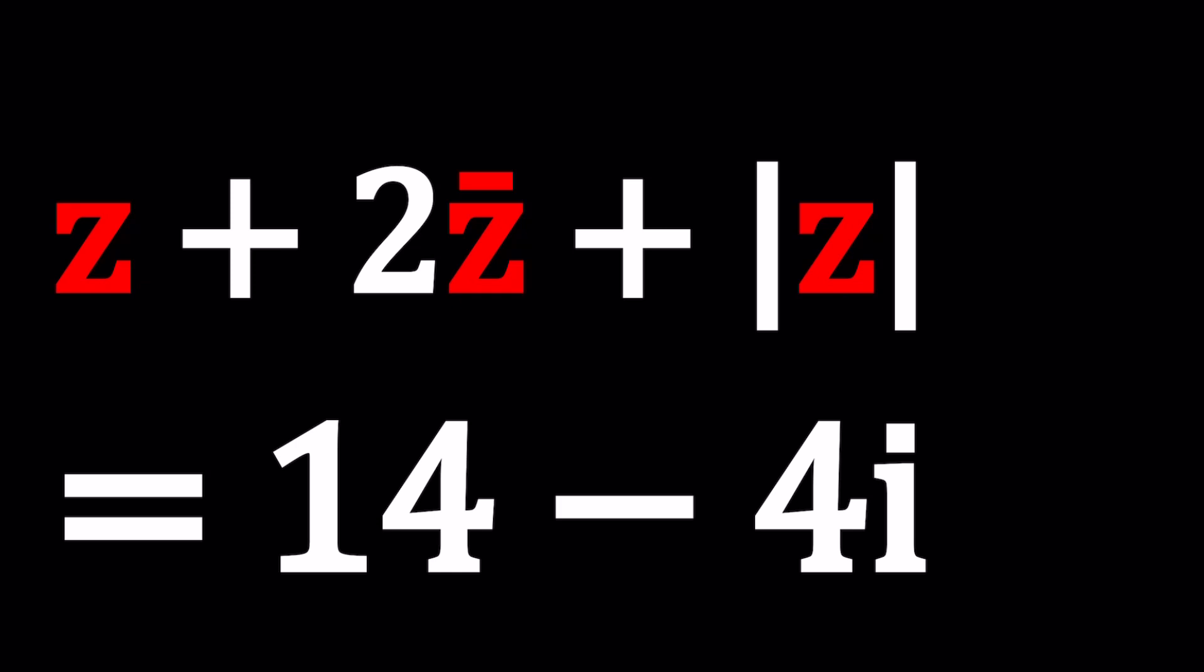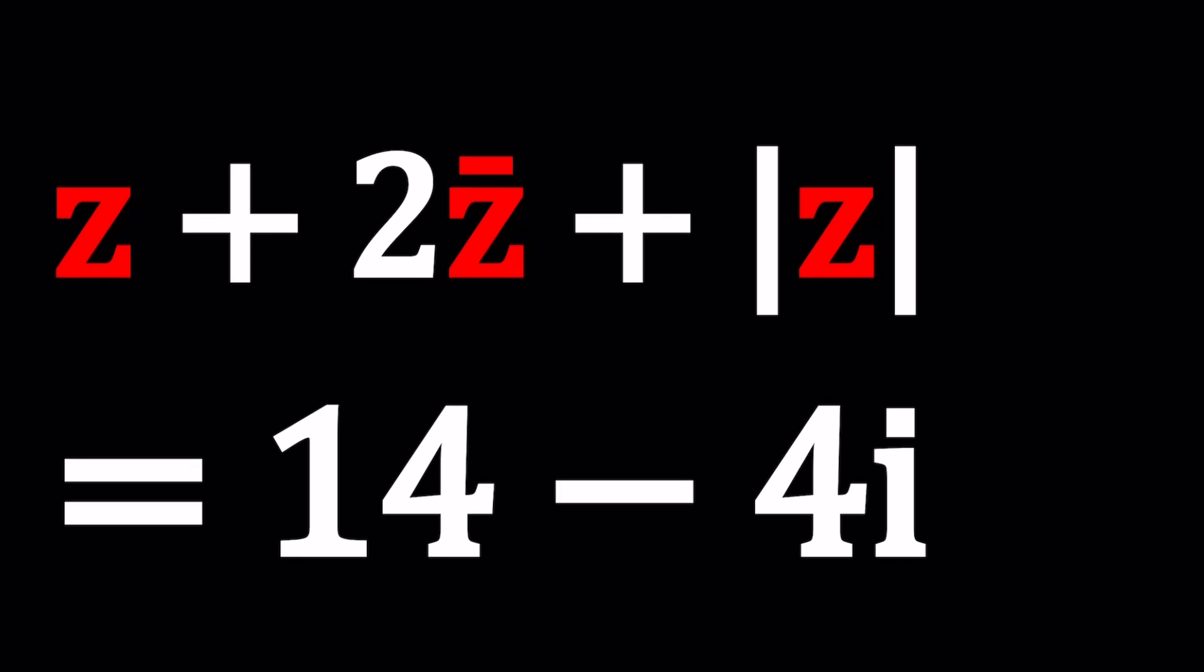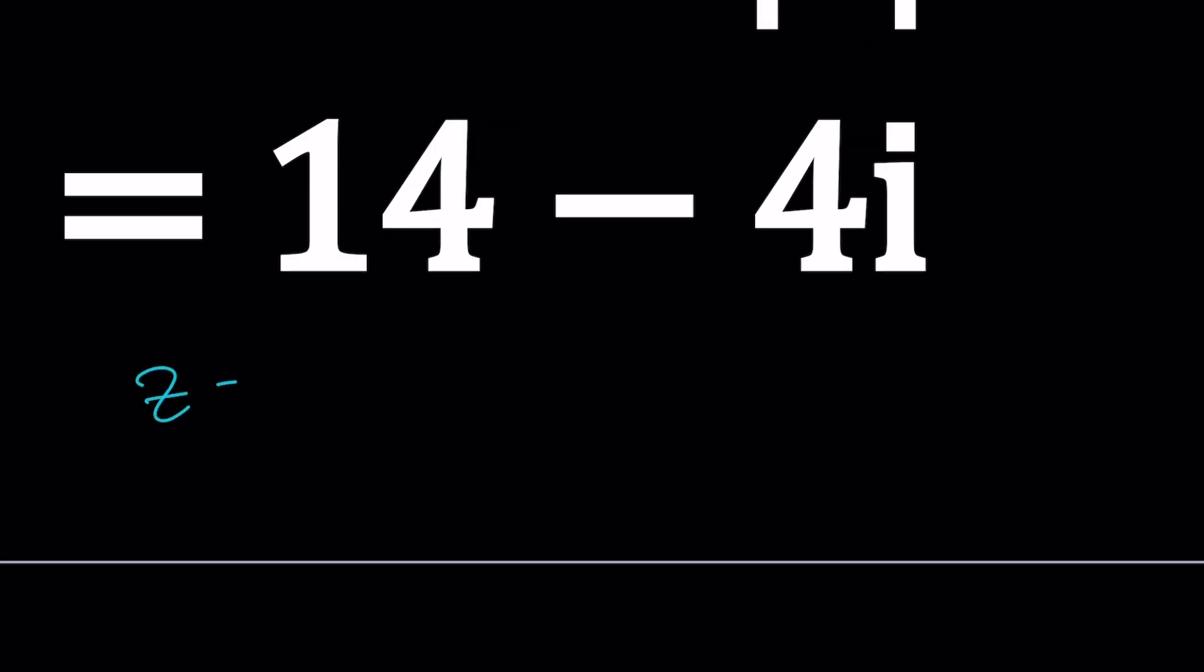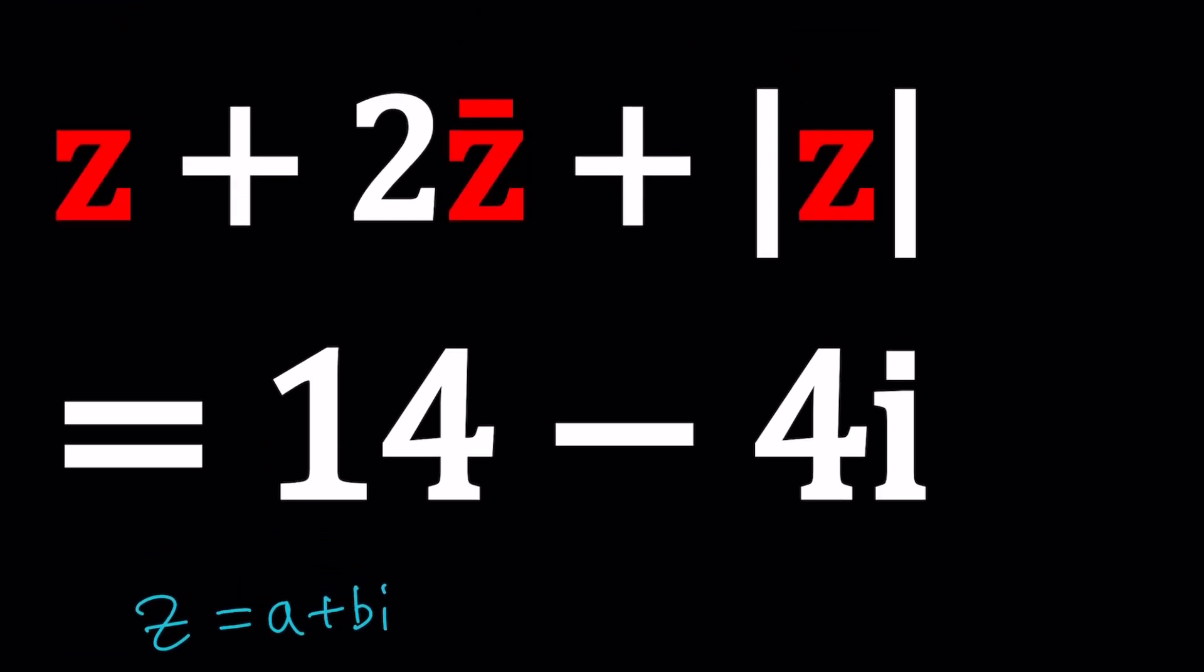Before we start solving, think about how many solutions we can get from here or are there any solutions? What's your guess? Just make a guess and we're going to go ahead and check it. Okay? So whenever you have an equation like this, remember what I said in that video, anytime you have a combination of Z, Z bar, absolute value, you should do something which is replacing Z with A plus B I. Why? Because it's the name of this channel, right? Obviously, that's the main reason. But the not so main reason is it's going to work.